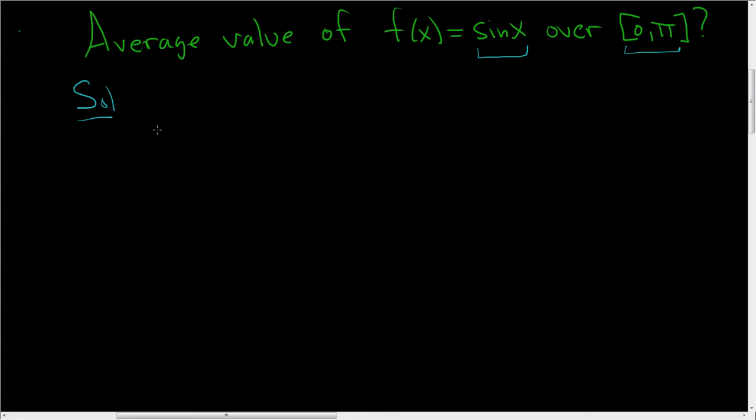So before we start, I recall that the average value of a function over an interval is equal to 1 over b minus a times the definite integral from a to b of the function, which we'll call f of x, with respect to x.